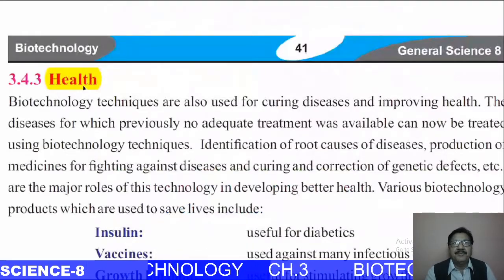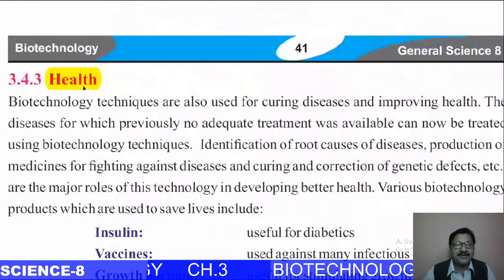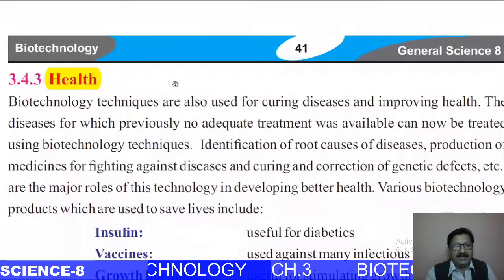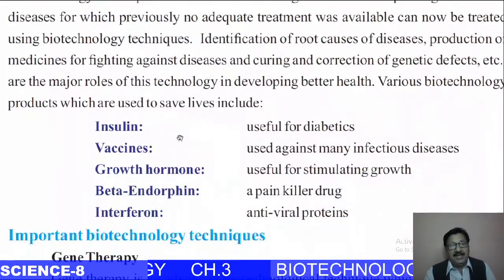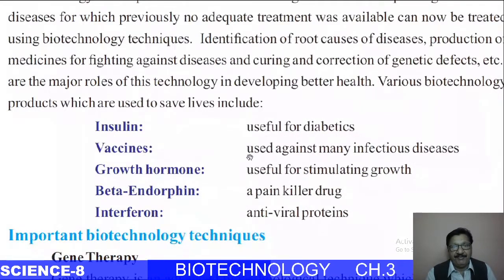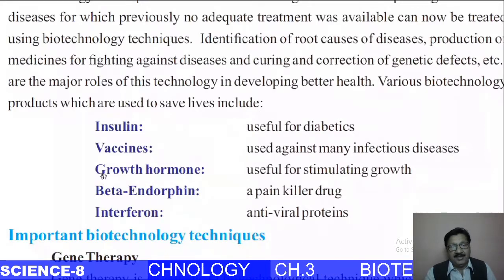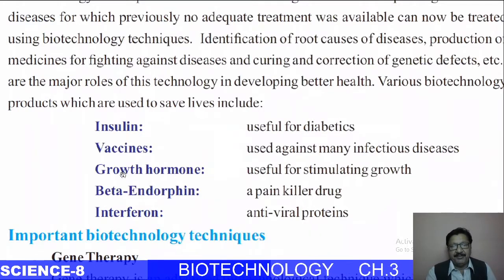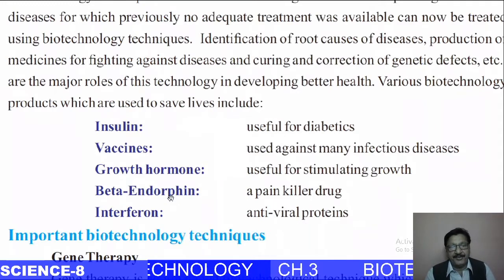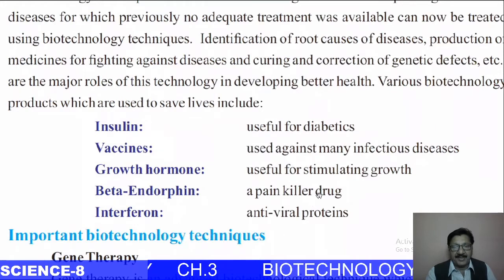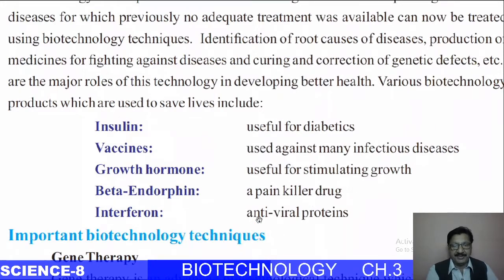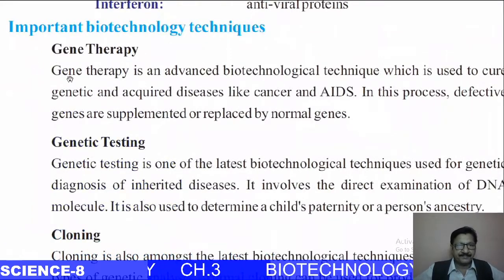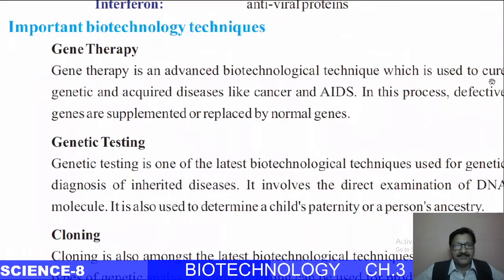Biotechnology has helped us in the field of health. Many medicines are prepared — one of them is insulin, which we have just discussed. Vaccines are prepared for the treatment of diseases. Growth problems are treated with the help of growth hormones. A painkiller called beta-endorphin is also prepared by biotechnologists. Interferon, an antiviral protein, is prepared by scientists using biotechnology, improving our health day by day.